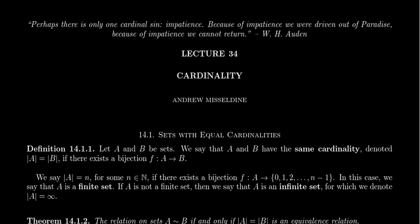Previously, as we've been talking about functions and particularly about bijections, we brought up the pigeonhole principle. The pigeonhole principle told us in the language of functions that there cannot exist a bijection between two sets A and B when their cardinalities are different. And so the question I pose in this video is: is this process reversible? That is, does there always exist a bijection between two sets of equal cardinality?